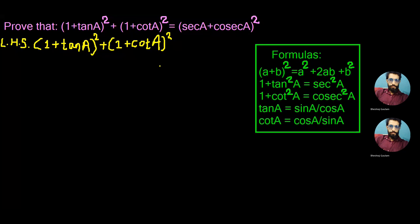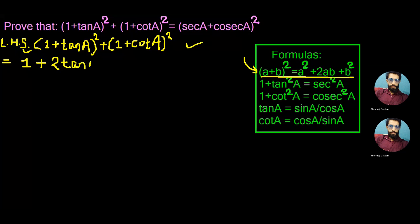Let's start the solution of the given equation from the left-hand side, which is given as (1 + tan a) whole square plus (1 + cot a) whole square. First, we expand the first bracket using the formula (a + b)² = a² + 2ab + b². Doing so, we get 1² = 1, plus 2 × 1 × tan a = 2 tan a, and b² gives tan² a.